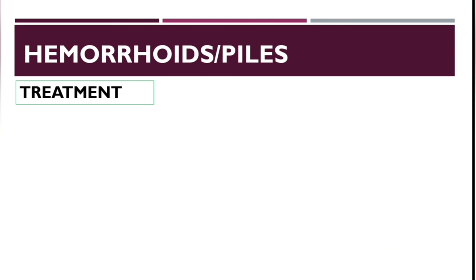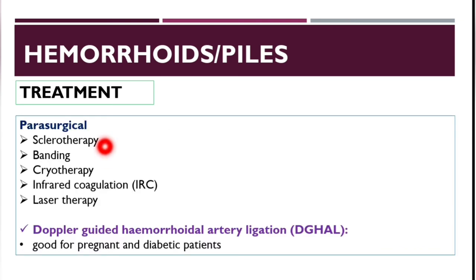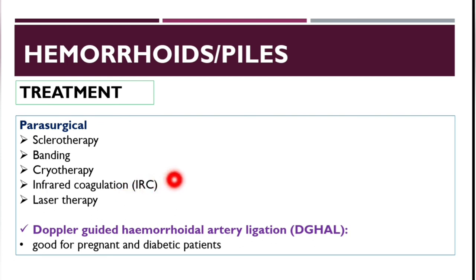Parasurgical treatment includes sclerotherapy, rubber band ligation (banding), cryotherapy, infrared coagulation (IRC) — typically used for thrombosis — laser therapy, and Doppler-guided hemorrhoidal artery ligation (DGHAL), which is particularly suitable for pregnant and diabetic patients.